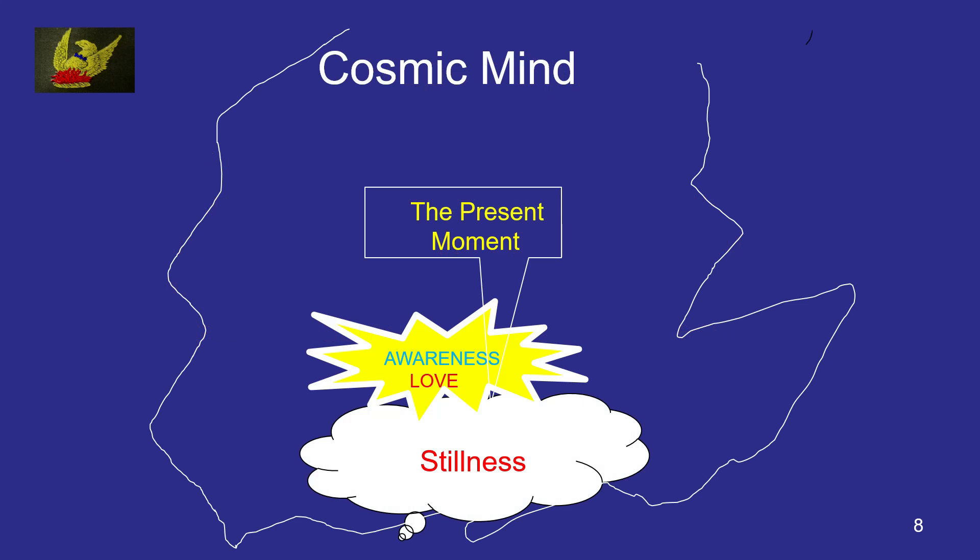It's something like this: here's the cosmic mind. There is stillness, which is right down at the bottom level by the quantum vacuum. And from this arises awareness. Rupert and other masters say that awareness is linked with love. And this is the present moment — what you sense in your brain if it's clean.